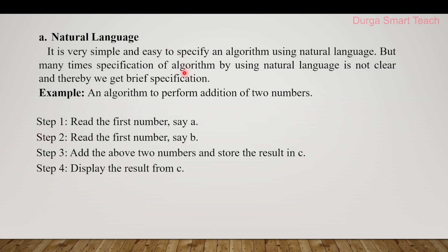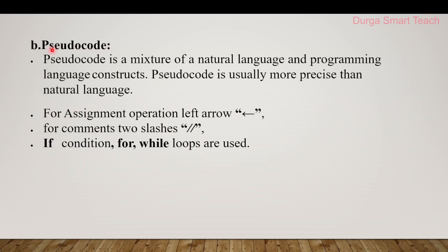The first way is natural language. We can design an algorithm using natural language — it is very simple and easy, but many times the specification is not clear, giving ambiguous descriptions. For example, to perform addition of two numbers: Step 1 — read the first number A; Step 2 — read the second number B; Step 3 — add both numbers and store the result. These four steps describe the algorithm using natural language.